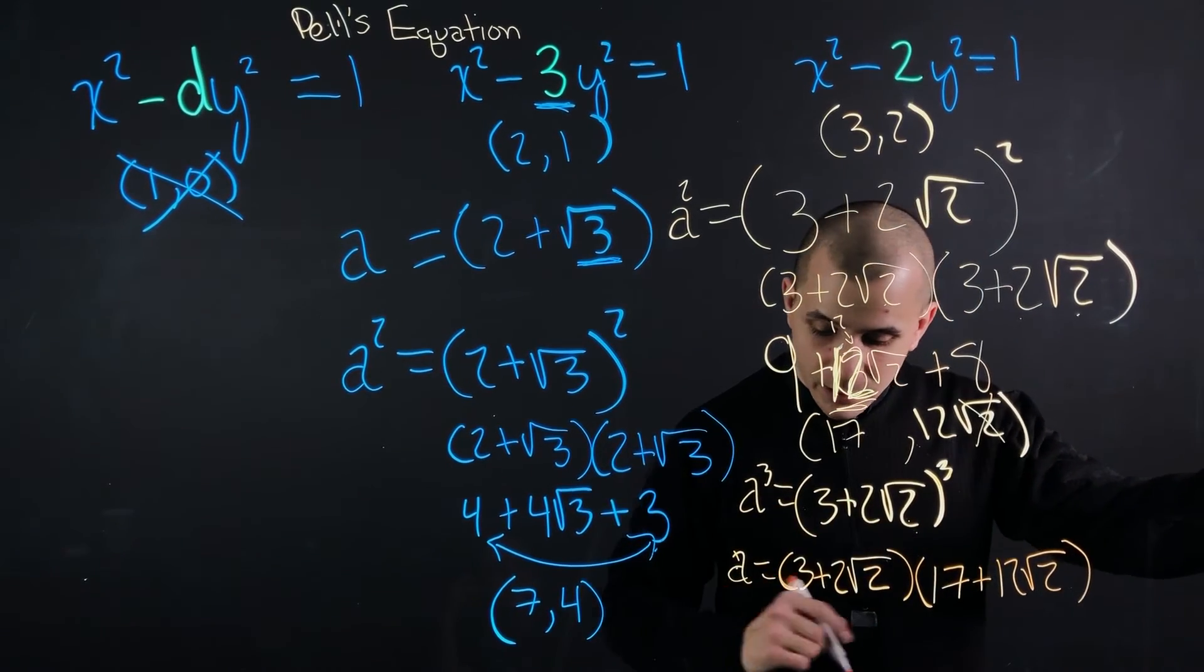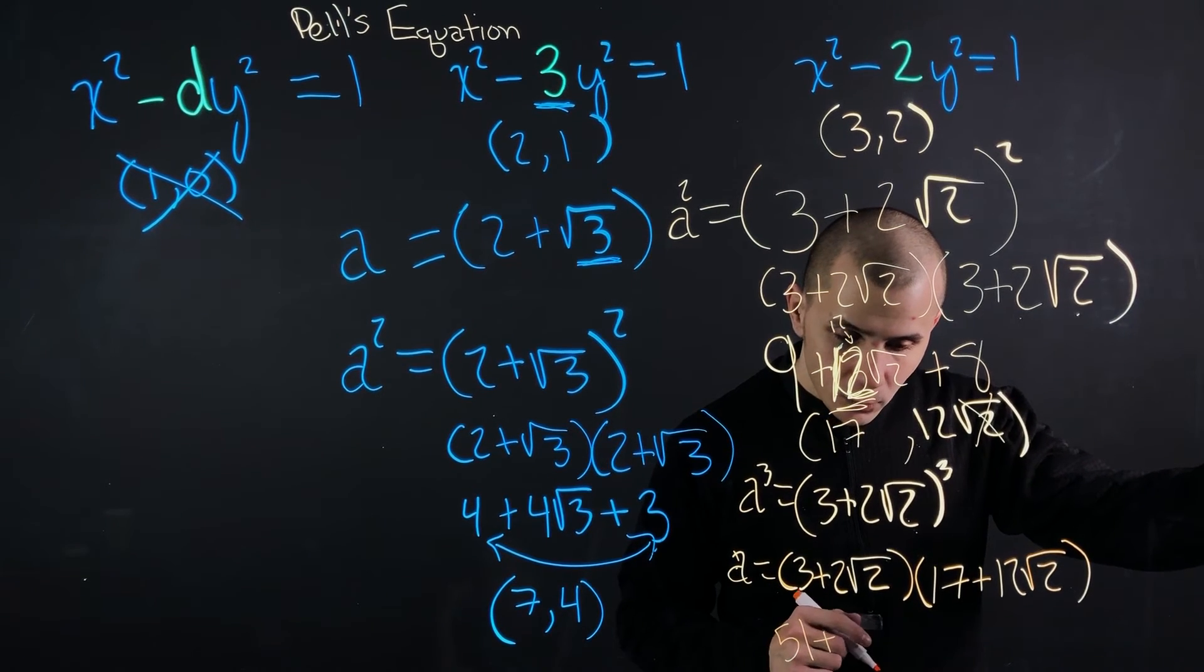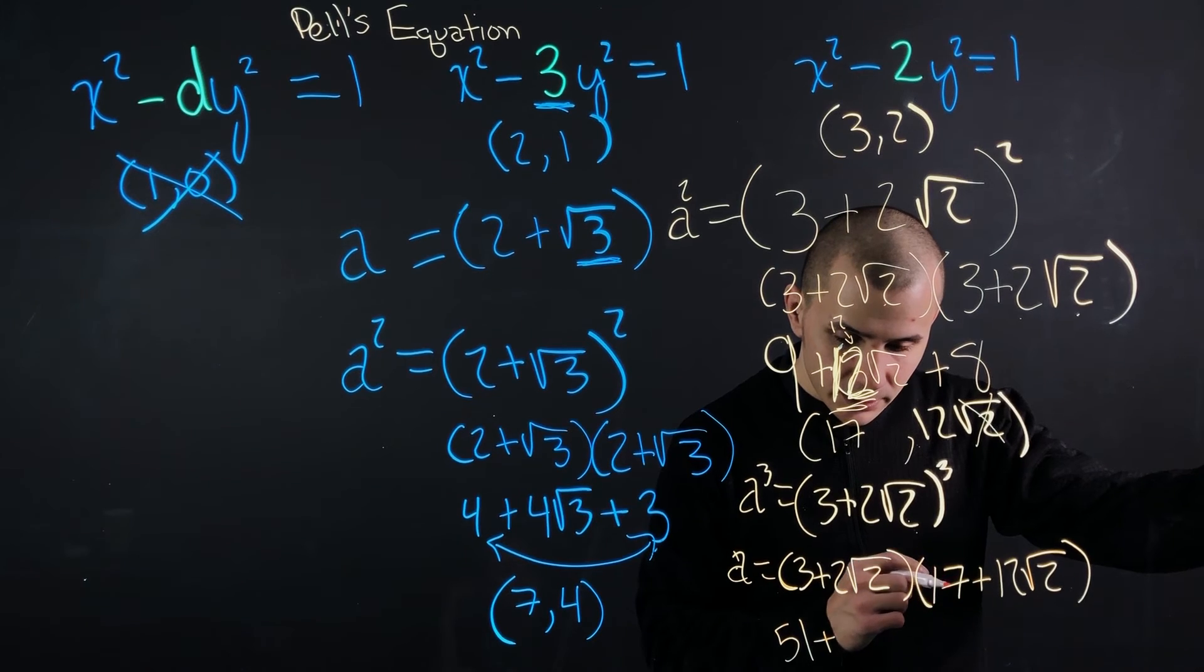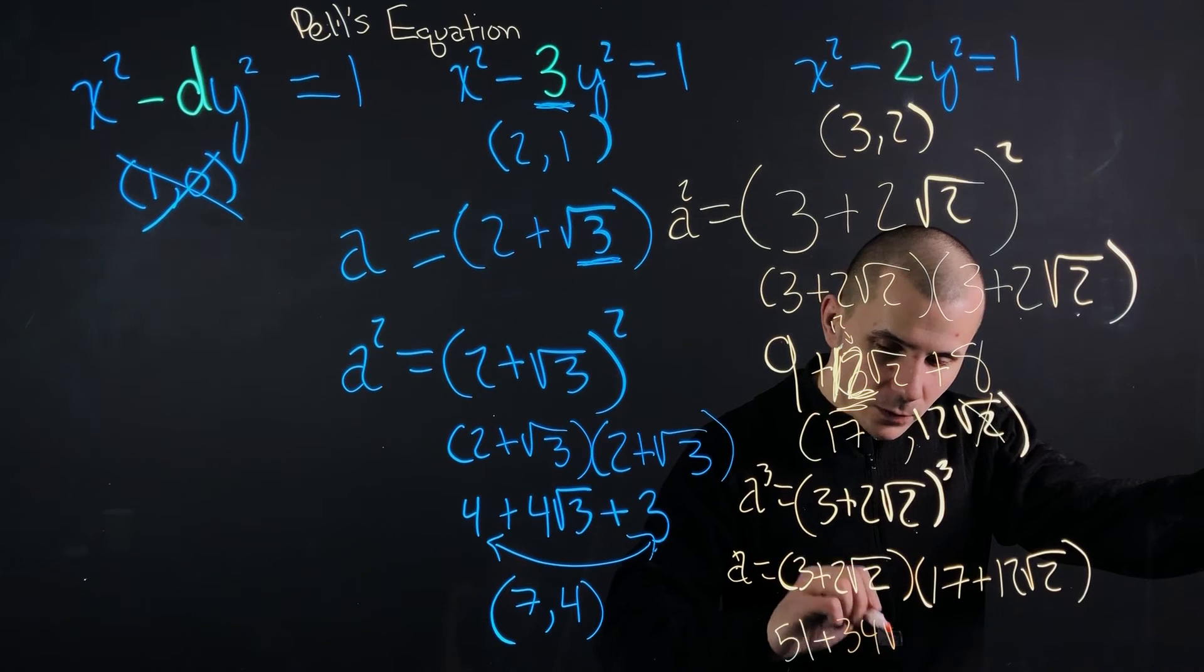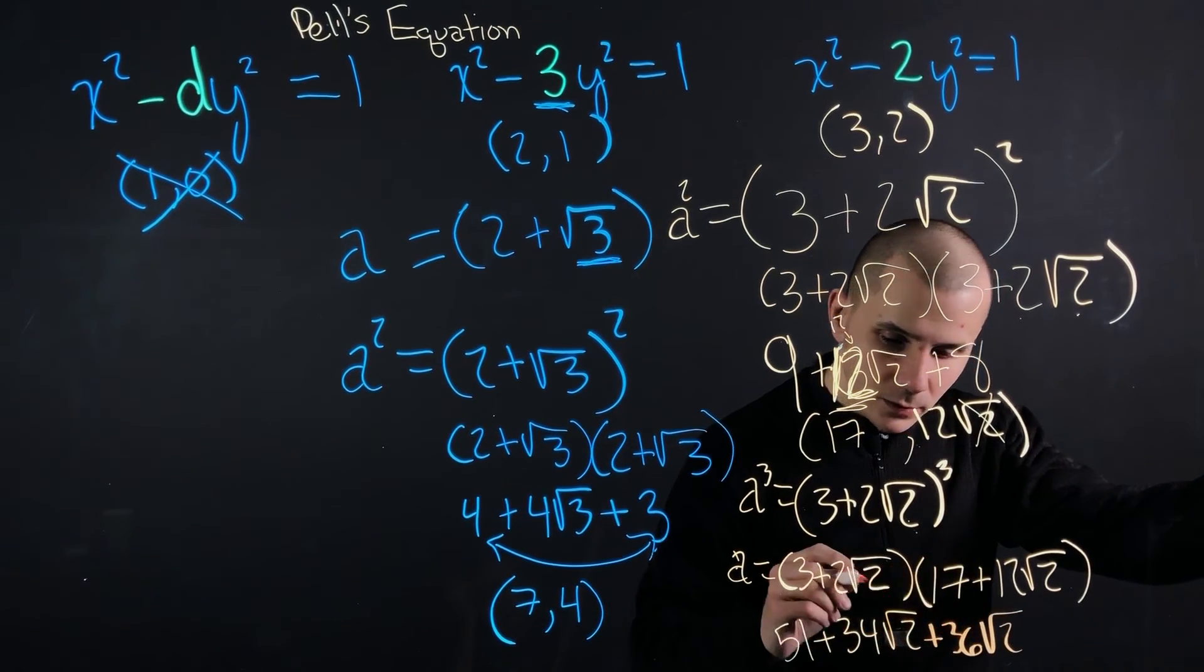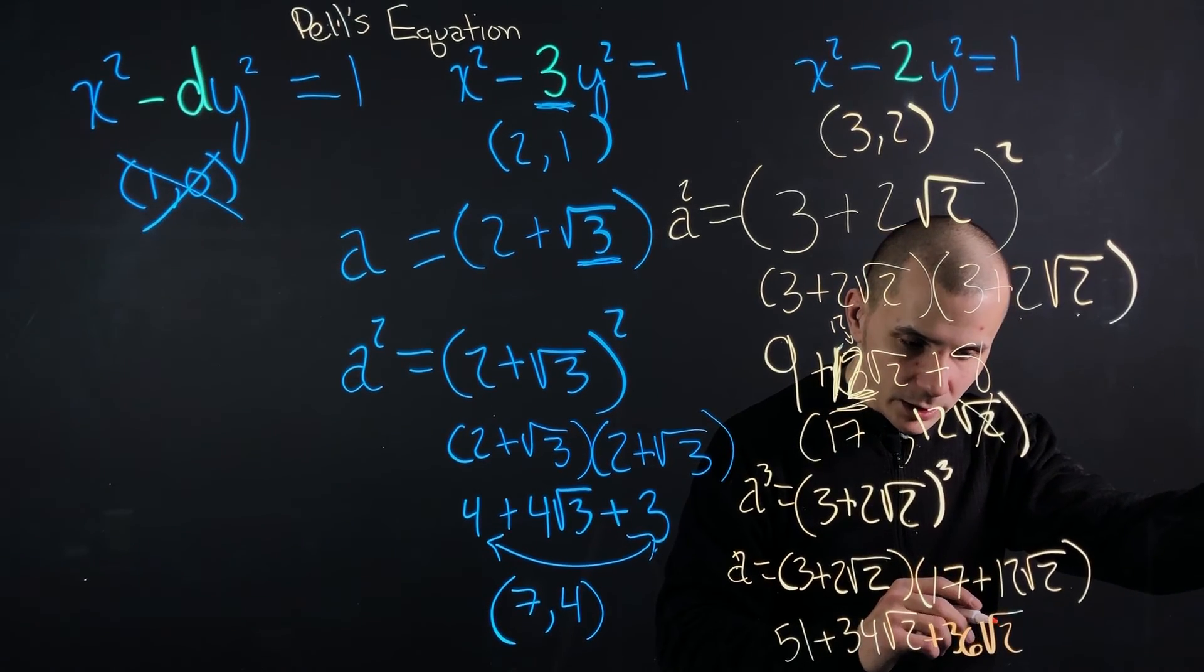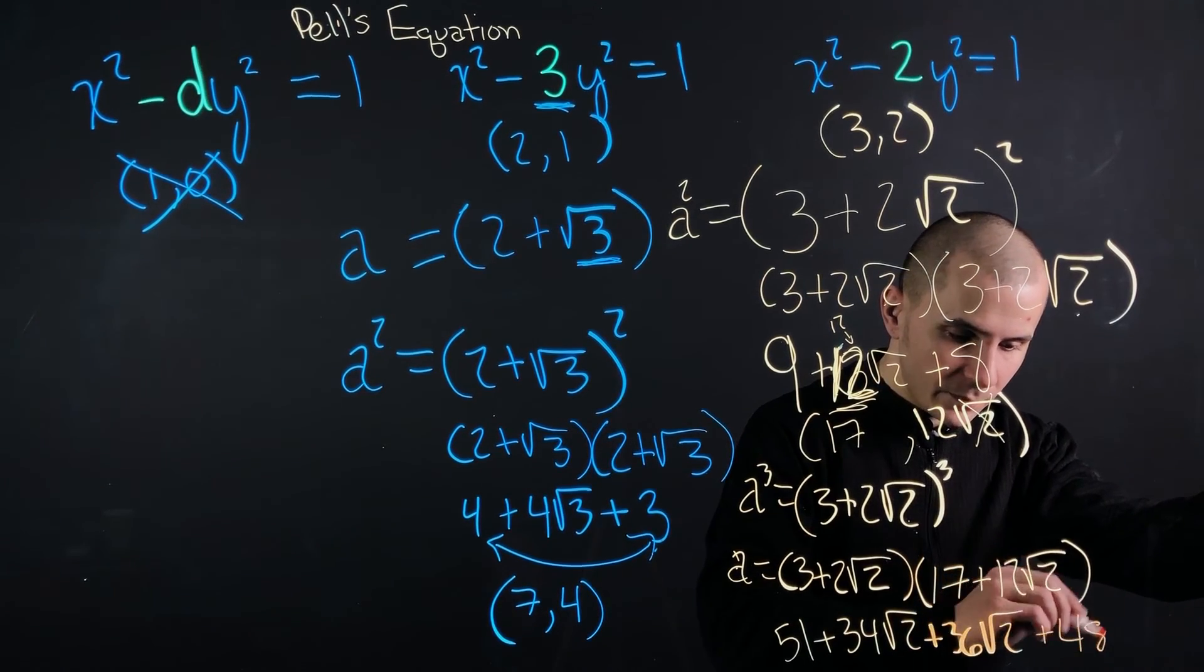We're going to do our first, 3 times 17 is going to be 51, plus our 2 times 17, which is going to be 34, 34√2. For our inner and our outer, that's going to be 36√2. And our 2 times 12 is going to be 24 times 2. So that's going to be 48. So that's going to be 48.